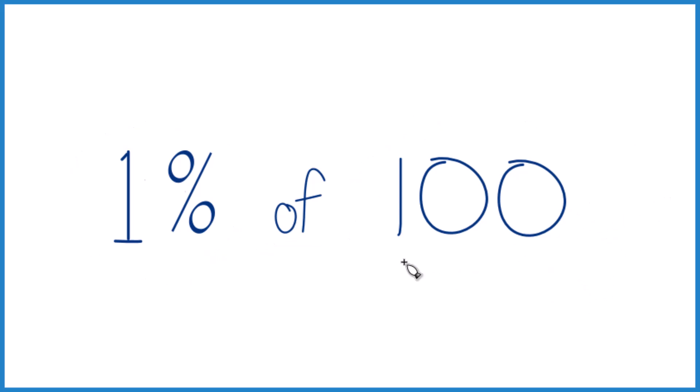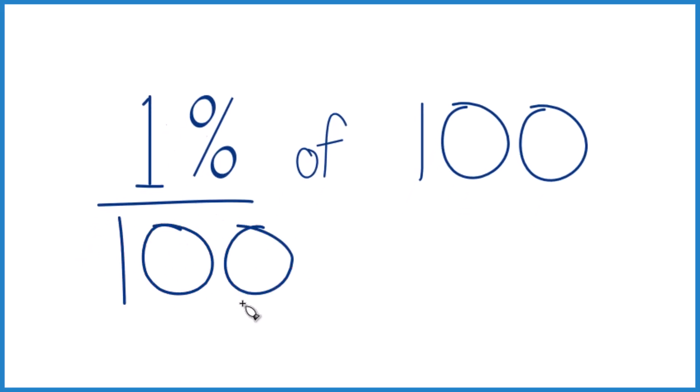When we think about percents, we're thinking per 100. So 1 per 100. And that means that 1% is just 1 out of 100. 1% of 100 is 1.